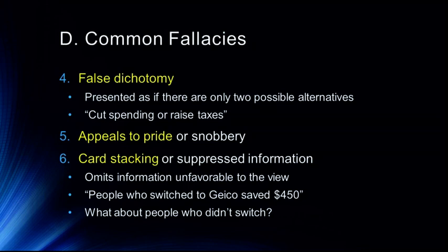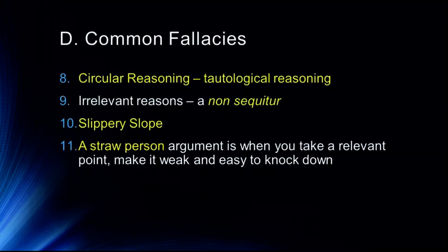Appeals to pride or snobbery suggest that 'good people' or 'smart people' do a certain thing. Card stacking or suppressed information omits information unfavorable to a view — the classic example being 'people who switch to Geico save $450,' which ignores that nobody switches insurance unless they're going to save money, presenting only one part of the equation. Circular reasoning, or tautological reasoning, is also common — for example, the levels of processing theory was criticized for this: 'deeper processing results in better memory; we know it's deeper processing because it shows better memory.' That's clear circular reasoning.